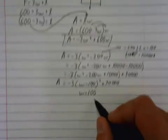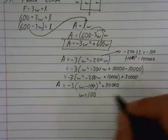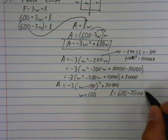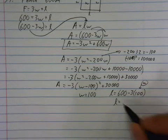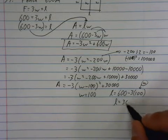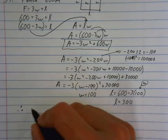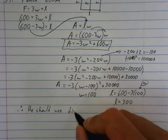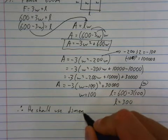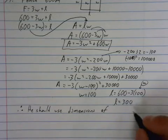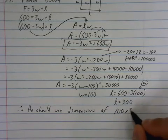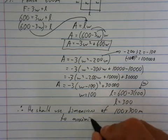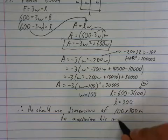Now if W is equal to 100, we're going to go way back up here and plug this in. So L then is equal to 600 minus three times 100 because that's W. So the length to maximize ends up being 300. Therefore, he should use dimensions of 100 by 300 meters to maximize his area.